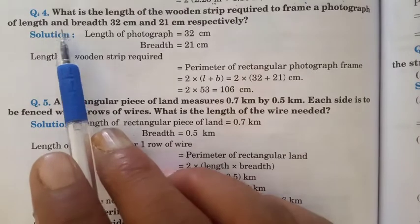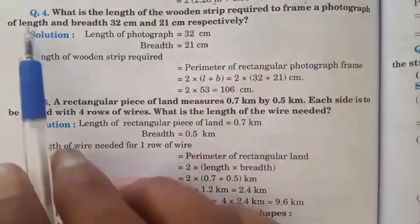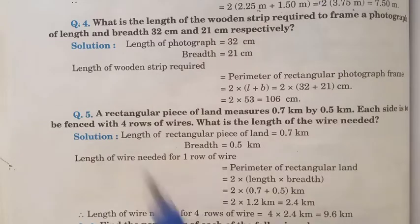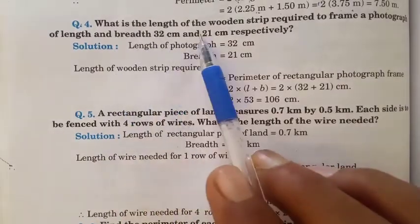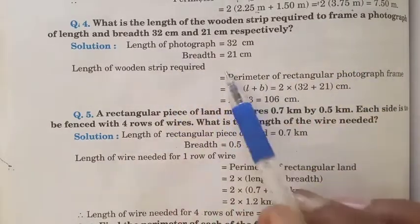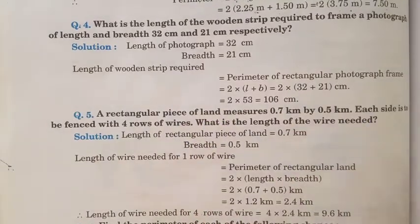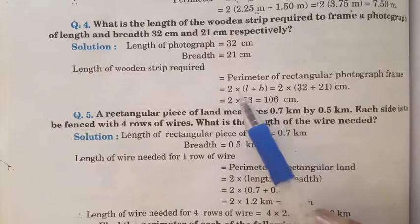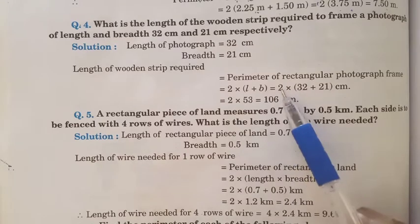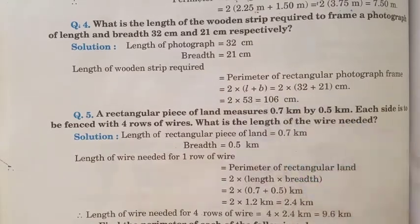Solution 4: What is the length of the wooden strip required to frame a photograph? The length of the wooden strip required means the perimeter of the rectangle. Perimeter of rectangle = 2 into (L + B). The length is 32 cm. The total perimeter calculates to 10.6 centimeters.